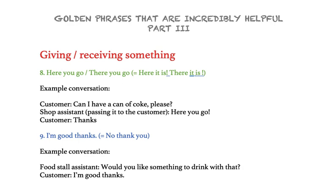I'm going to try to keep this video short. Alright — giving and receiving something. When we give something to someone, we need to say something, and there are two phrases you see on the screen: the first one is 'here you go' and the second one is 'there you go.' If your friend asks you to give your mobile phone to him just because he needs to make an urgent call, as you're giving it to him you can say 'here you go' or 'there you go.'